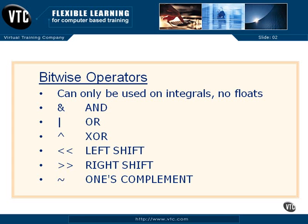Let's take a look at some of the bitwise operators available to us in the C programming language. These work on the bit levels of the values of our variables. Since we are working at the bit level, we cannot deal with floating points, because floats are stored in IEEE floating point format — they are not considered bitwise — so no floats.